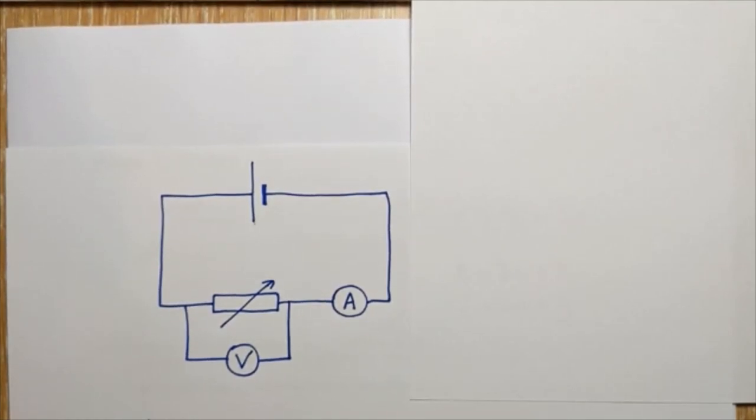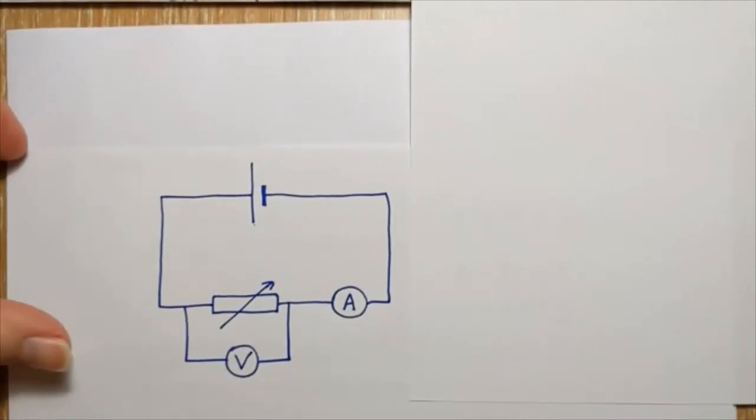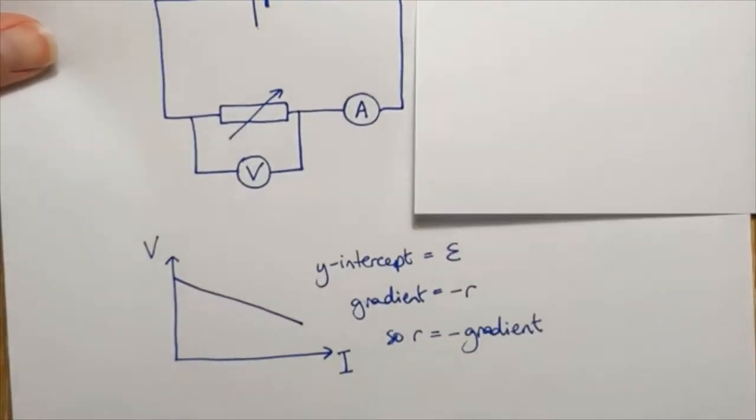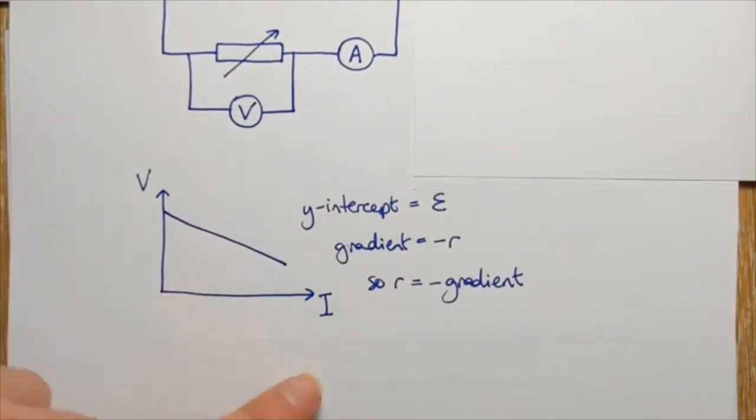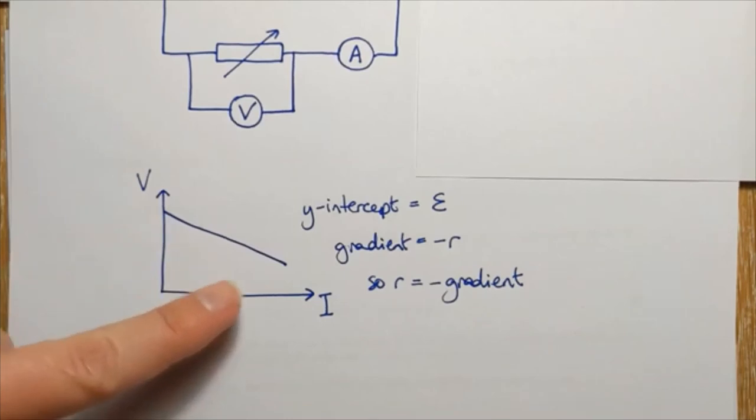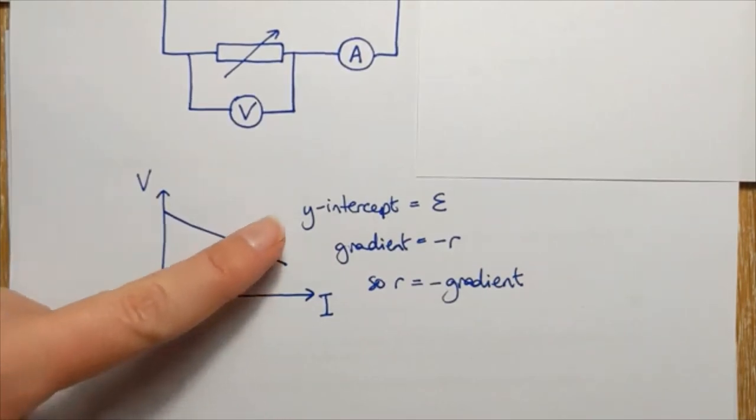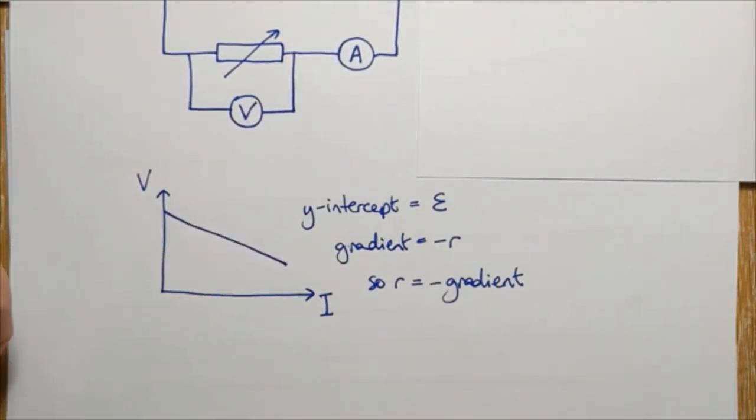And then for five to six marks, you would also need to say that you will plot the potential difference against the current and you expect a straight line. The y-intercept will be the EMF and the gradient will be minus R. And so the internal resistance is minus the gradient. So it's a little bit unclear exactly how they would put the marks there, with this being an old question. But if you stick to the plan, you will definitely get the marks.